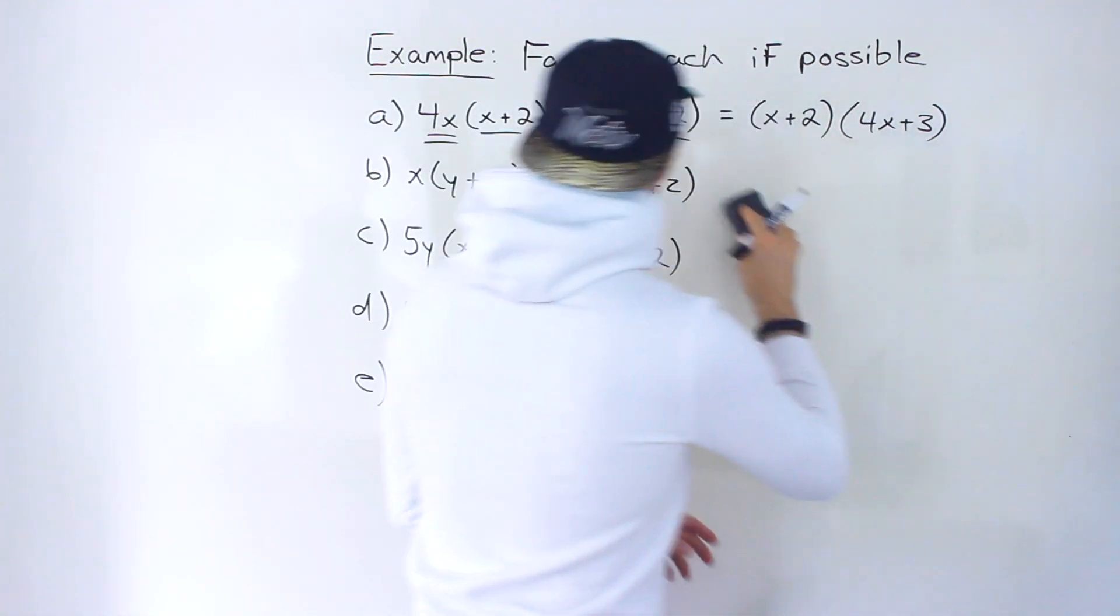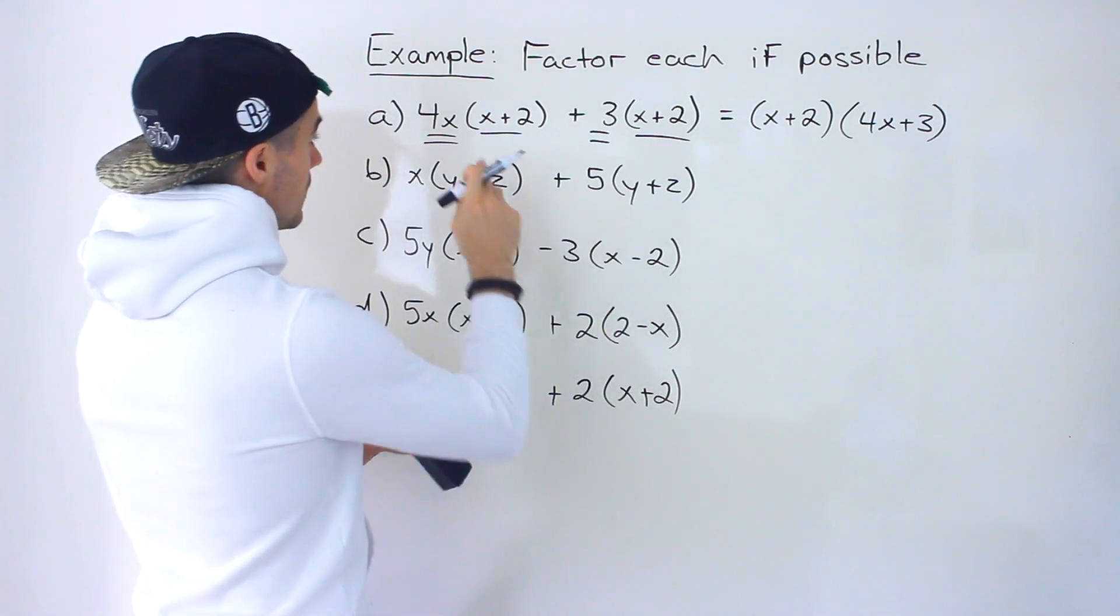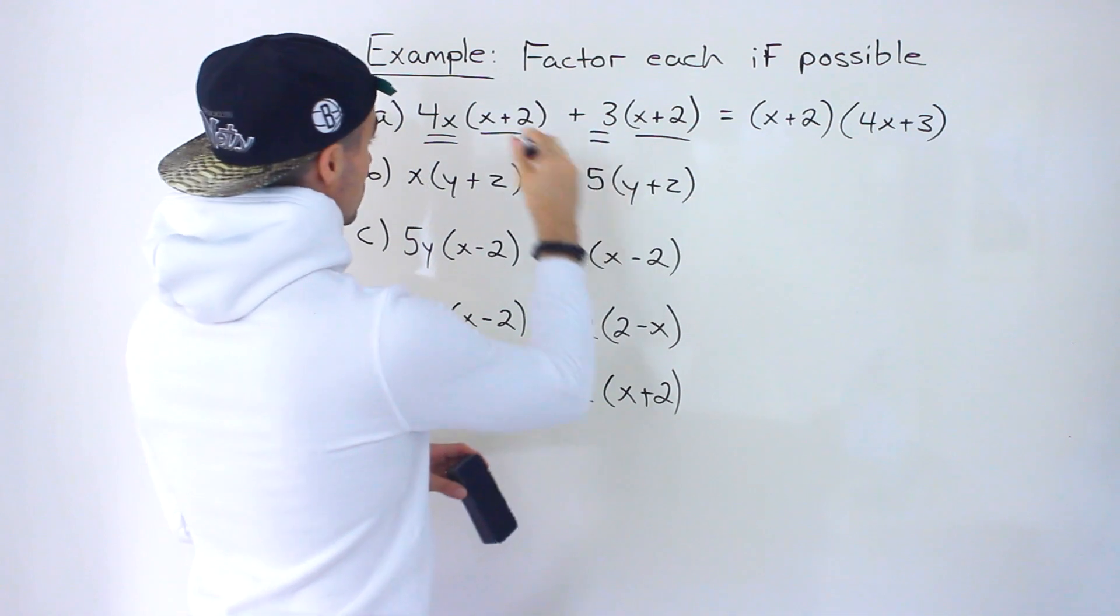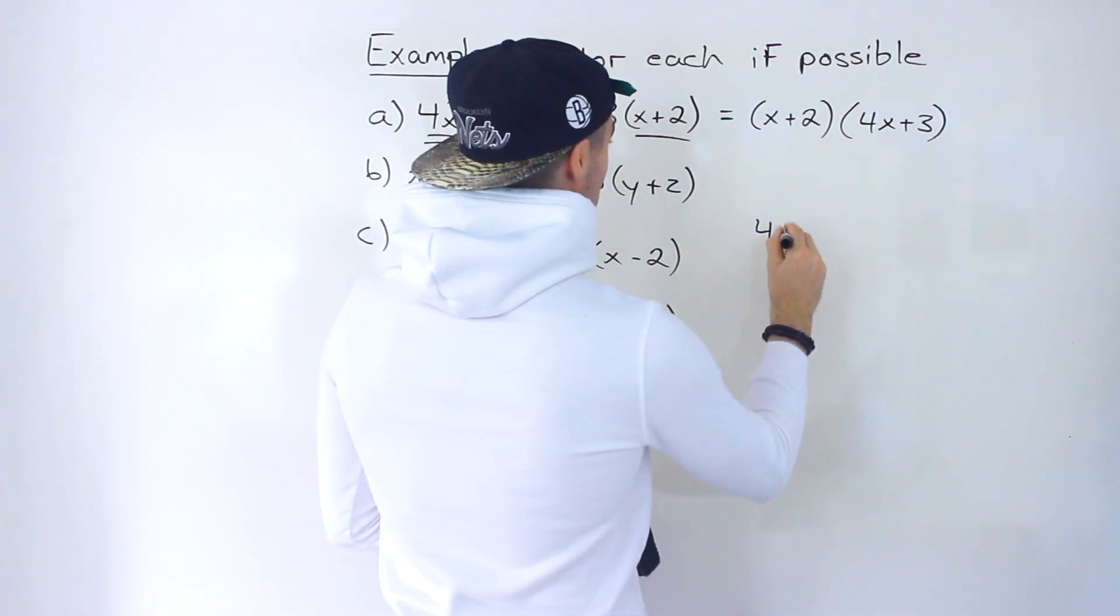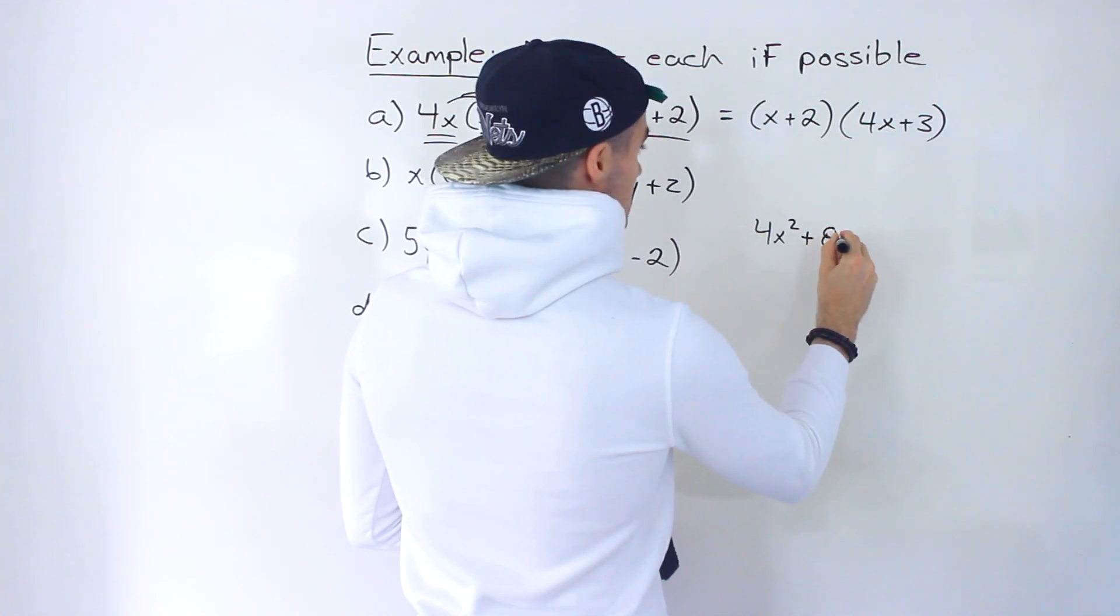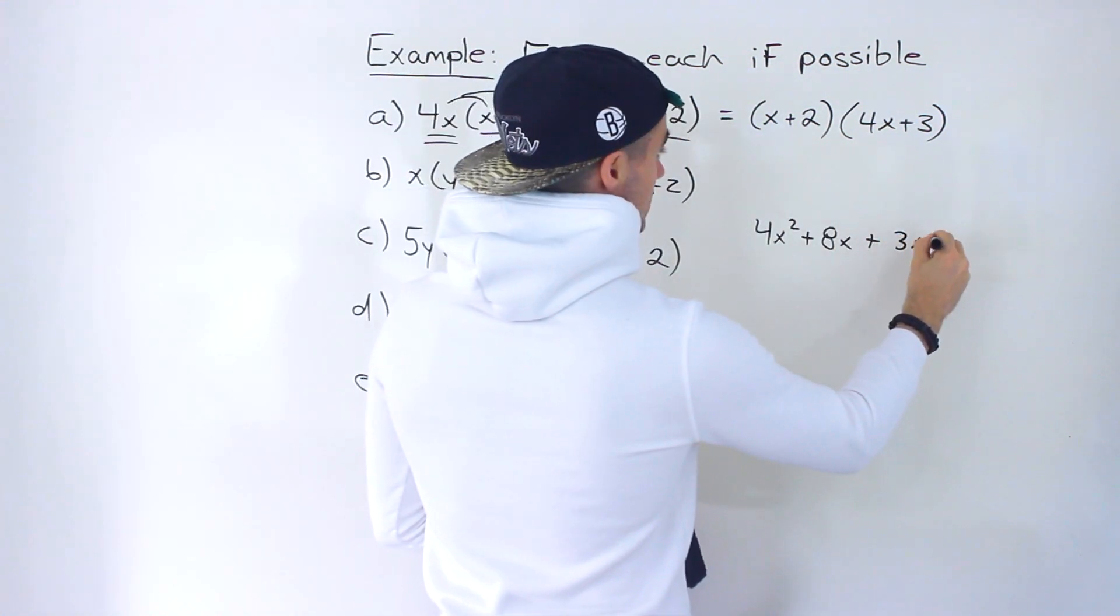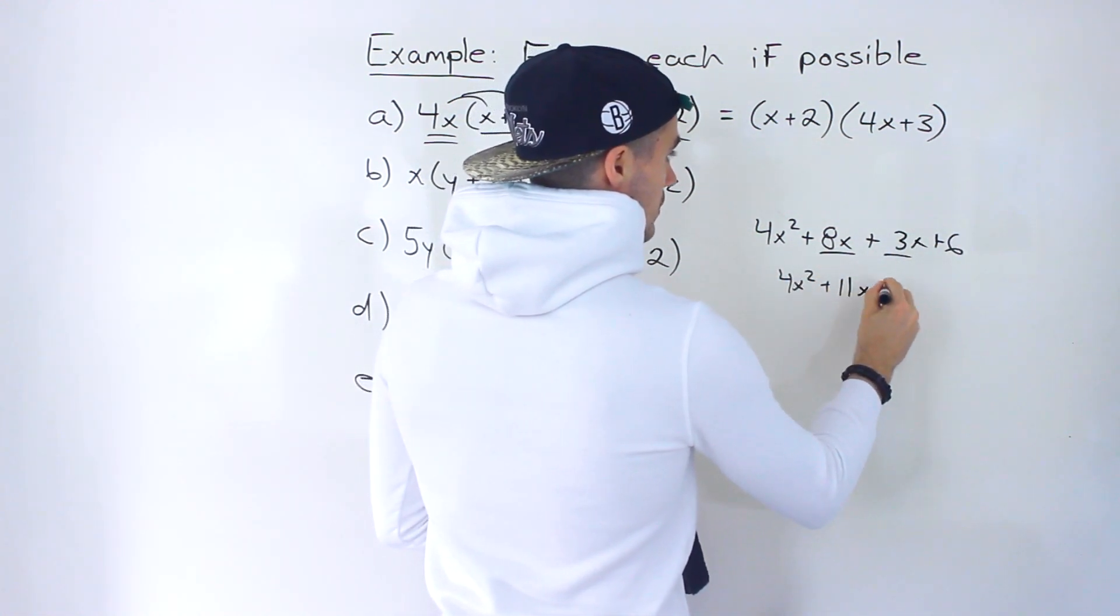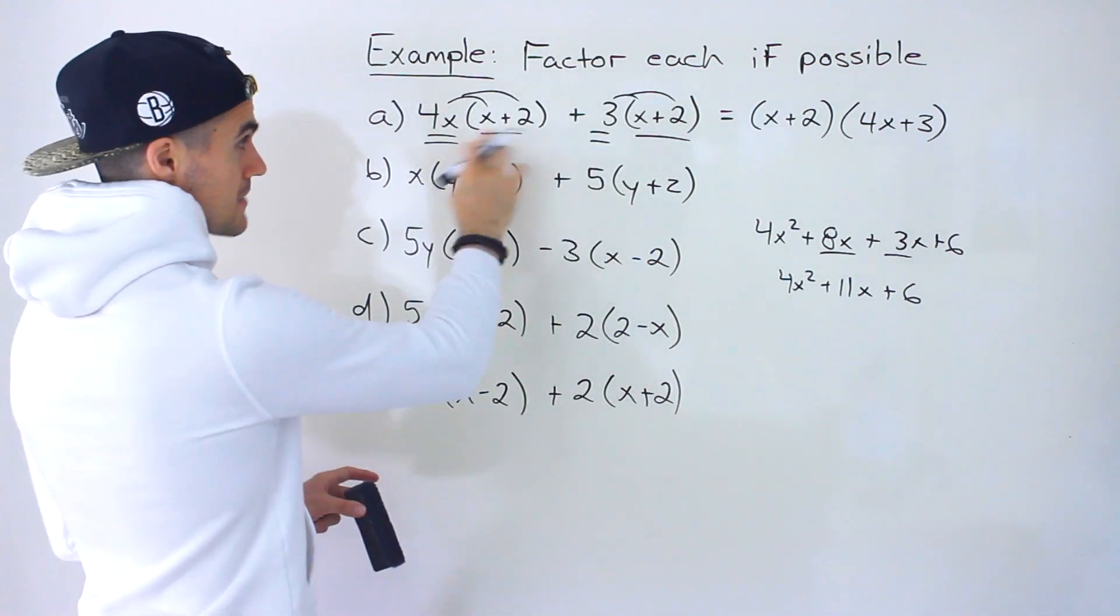And I'm not going to do this for every one of these, but just to confirm that this does work out, notice what would happen if we would expand everything here and simplify. So taking the 4x and then distributing it in the bracket, we'd have 4x squared plus 8x plus distributing the 3 in the bracket, we would have 3x plus 6.